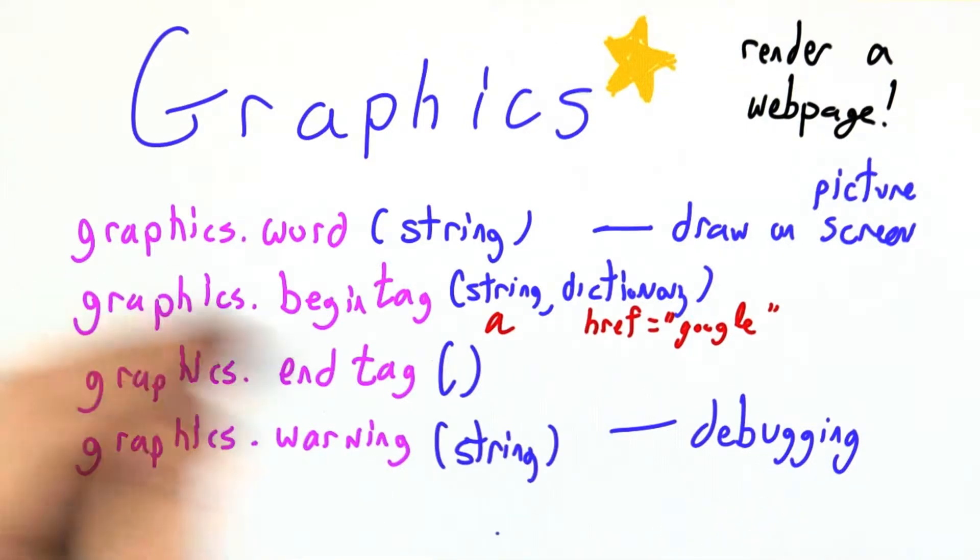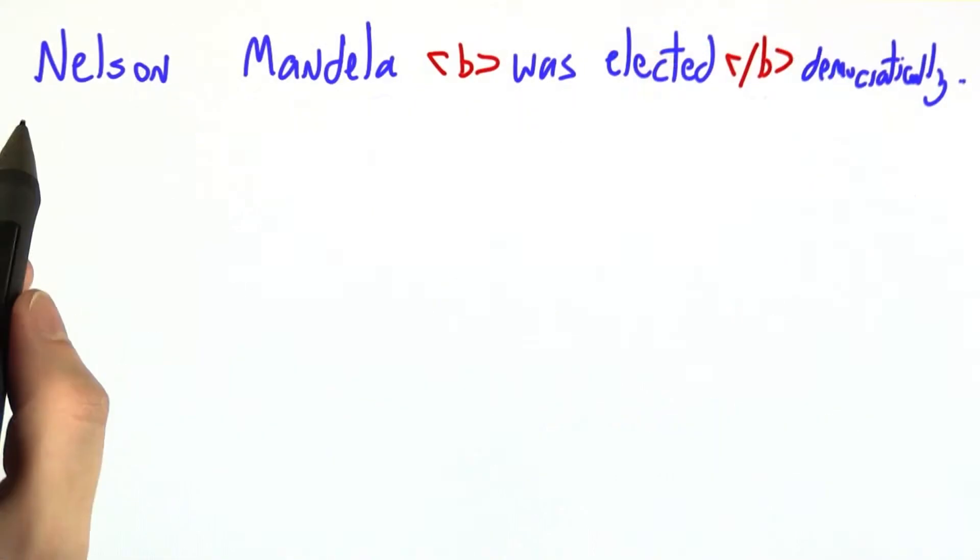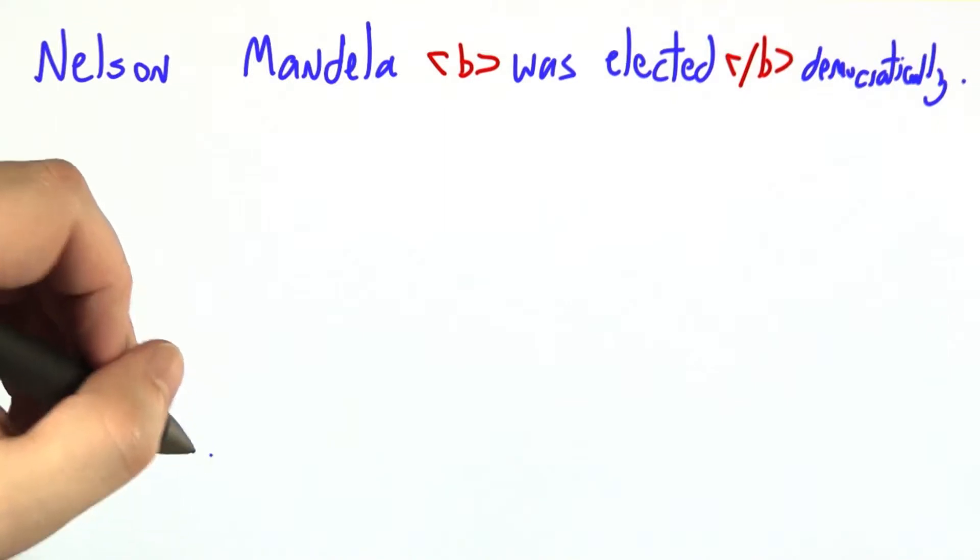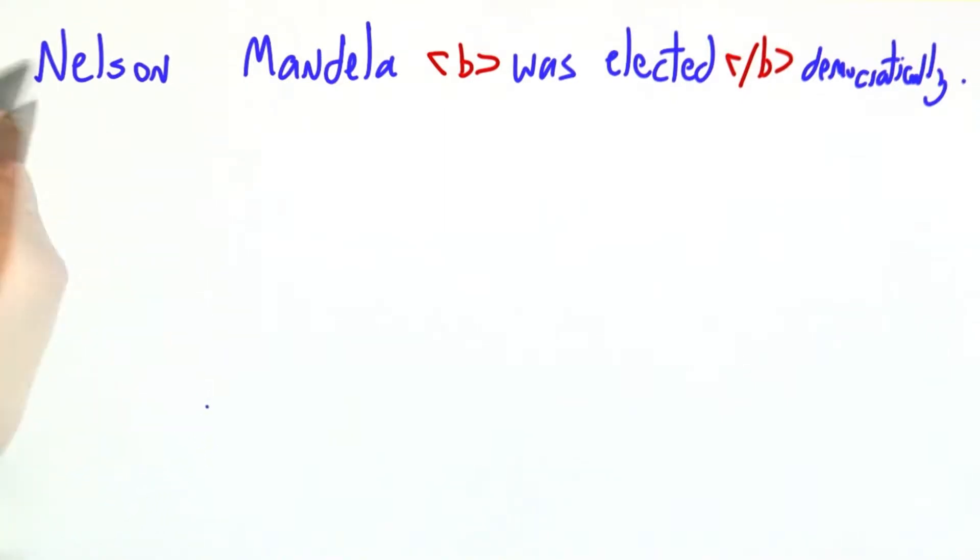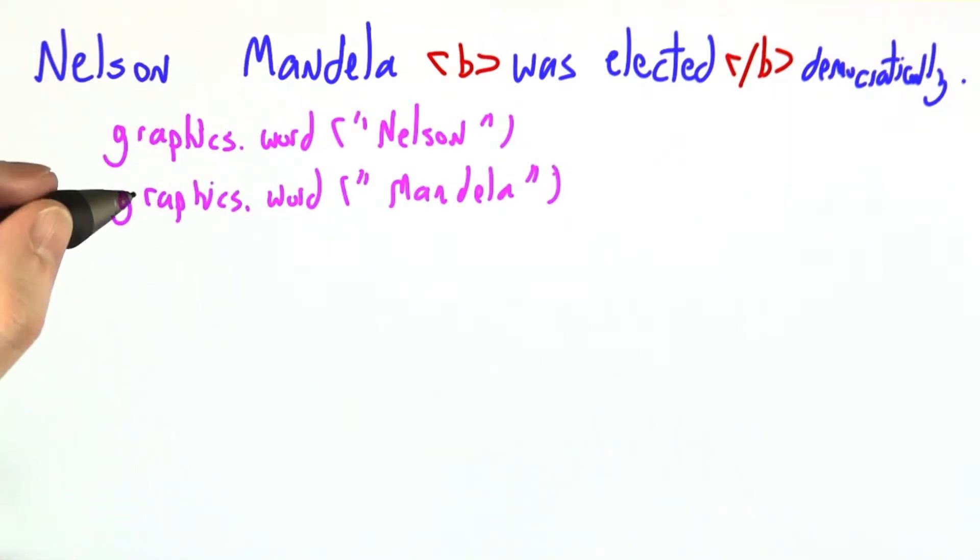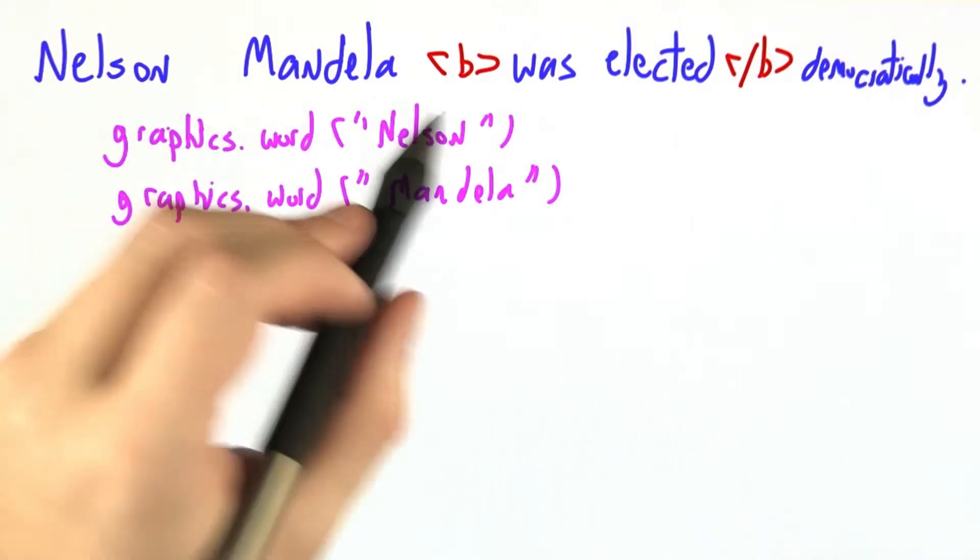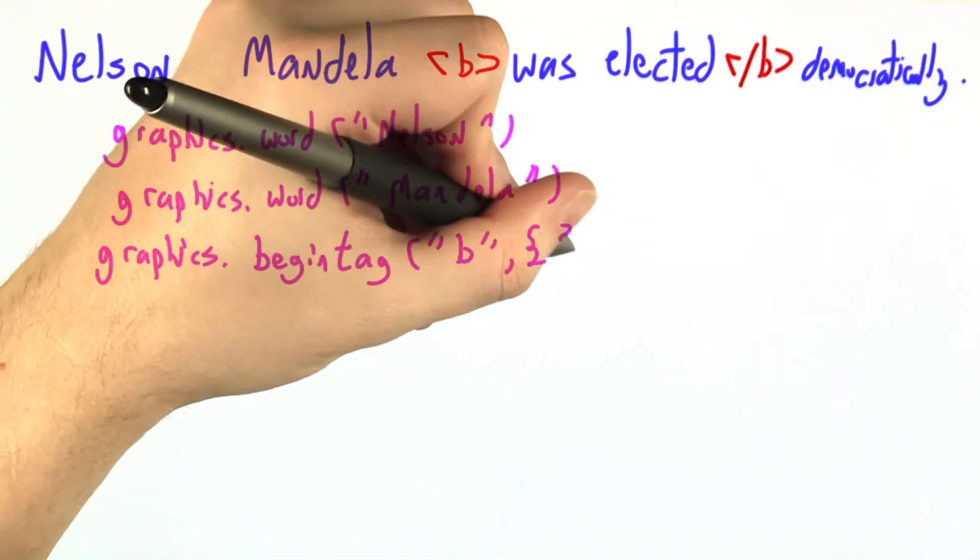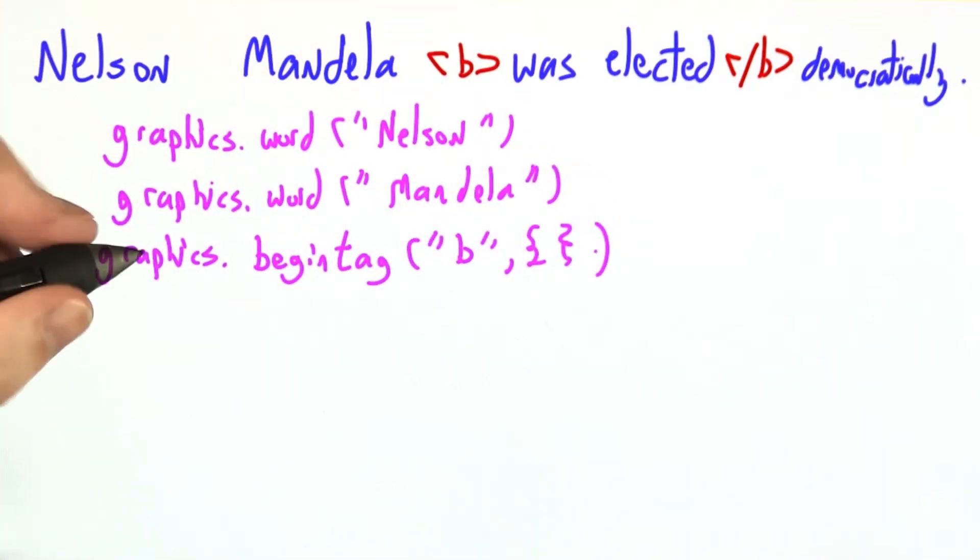So let's imagine that we have the following web page input. Nelson Mandela was elected democratically. I'm going to show you the sequence of calls to the graphics library that we would want. Conceptually the first thing we're going to do is print out the word Nelson on the screen. Then we'll want to print out the word Mandela on the screen. Then we want to tell the graphics library that for a while subsequent words should be bolded. So we'll begin a bold tag. This bold tag doesn't have any arguments, so I'll just pass in the empty dictionary. That didn't actually draw anything on the screen. It's just a note to begin drawing in bold.